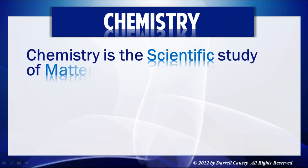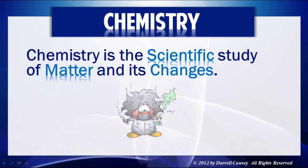Chemistry is the scientific study of matter and its changes, which tells us that chemistry is a science, and that makes it systematic. It's the science of matter and its changes. So we're going to take a look at science and the process of science, and then in coming videos, we'll talk about matter and matter's changes.